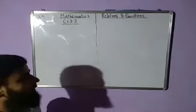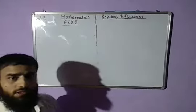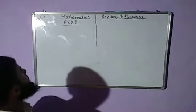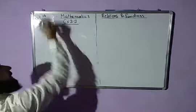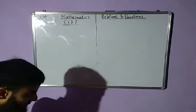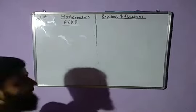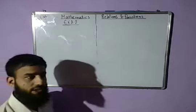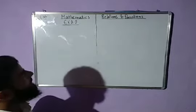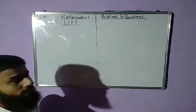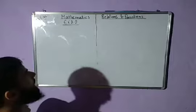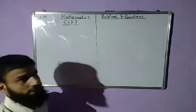Assalamu Alaikum friends, I am Mohmin Majeed and this is lecture number six for the eleventh class on Relations and Functions. Till now we have discussed all the concepts about relations, Cartesian product, and ordered pairs. Now we are left only with functions, but let's first do Exercise 2.2.